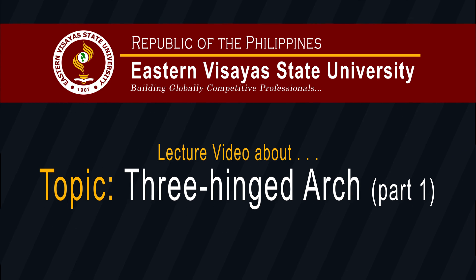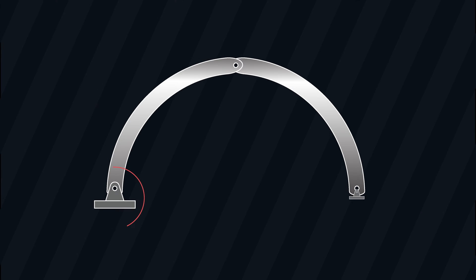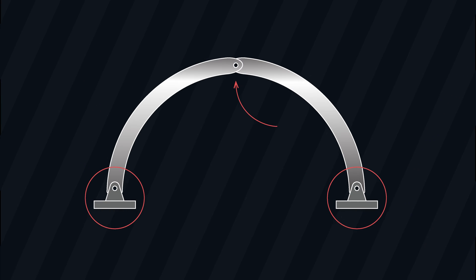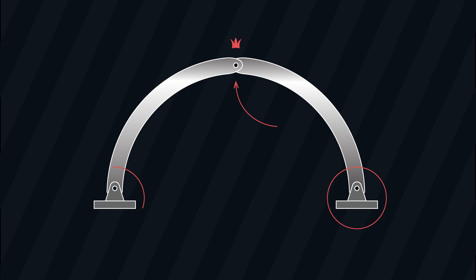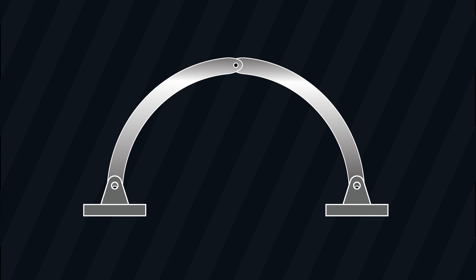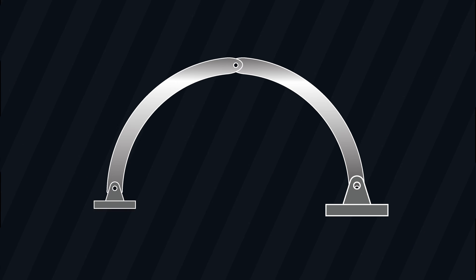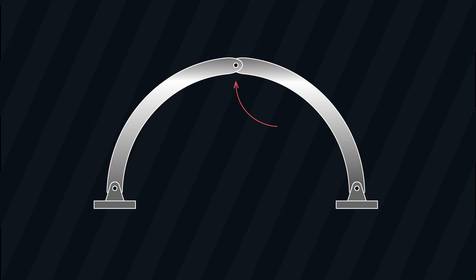So what is a 3-Hinge Arc? A 3-Hinge Arc is a structural member that consists of a curved beam supported by two external hinges and an internal hinge at its crown. The two external hinges are the supports that absorb horizontal and vertical forces, while the crown hinge renders the system statically determined, making the analysis of a 3-Hinge Arc fairly easy.